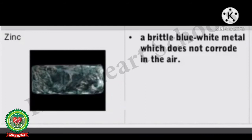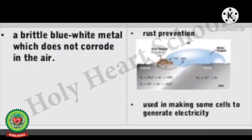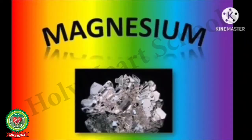Zinc: Zinc is a brittle blue-white metal which does not corrode in the air. Rusting of iron can be prevented with zinc by the process of galvanization. Zinc is also used in making some cells to generate electricity.